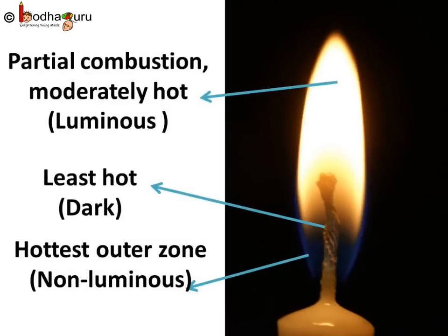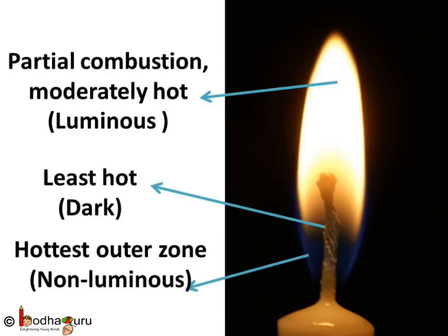Look at the flame — it has many colors. Not all parts of the flame are equally hot. The innermost part, which looks dark, is the least hot part — it is the dark zone. Wax vapor remains mostly unburnt here. The external bluish part is the hottest part; its temperature can be as high as 1400 degrees Celsius because complete combustion of fuel happens here — this is the non-luminous zone. The brightest part of the flame is a little cooler, around 1200 degrees Celsius, where partial combustion of fuel takes place — this is called the luminous zone.